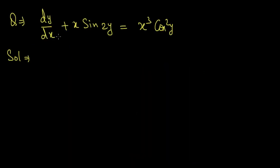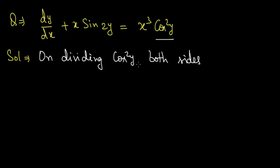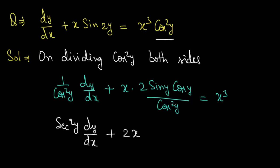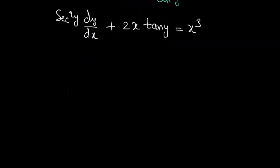For a second example, consider dy/dx + x·sin 2y = x³·cos²y. This is a Bernoulli equation. We remove the cos²y term by dividing both sides by cos²y, giving (1/cos²y)(dy/dx) + x·(sin 2y/cos²y) = x³. Writing sin 2y = 2 sin y cos y, this simplifies to sec²y·(dy/dx) + 2x·tan y = x³.